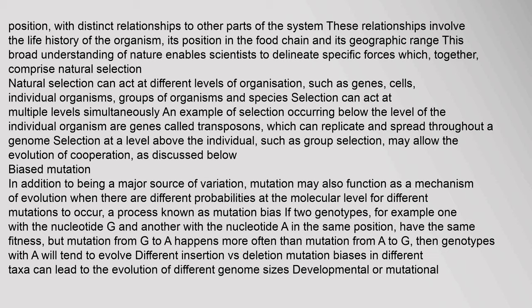These relationships involve the life history of the organism, its position in the food chain, and its geographic range. Natural selection can act at different levels of organization, such as genes, cells, individual organisms, groups of organisms, and species — selection can act at multiple levels simultaneously. An example of selection occurring below the level of the individual organism are genes called transposons, which can replicate and spread throughout a genome. Selection at a level above the individual, such as group selection, may allow the evolution of cooperation.